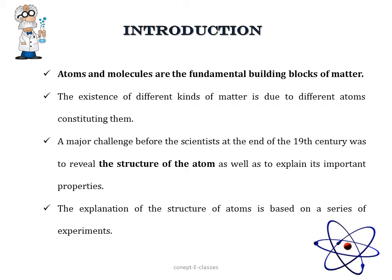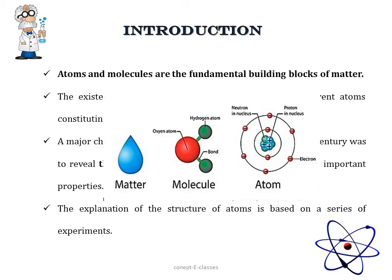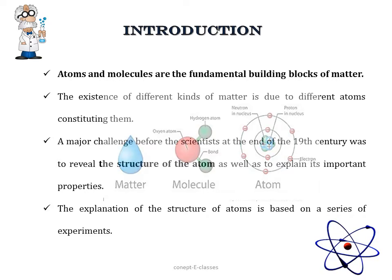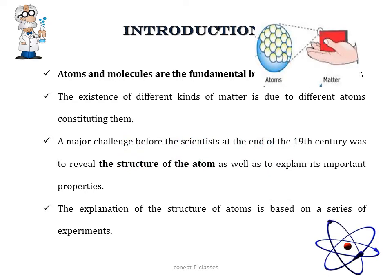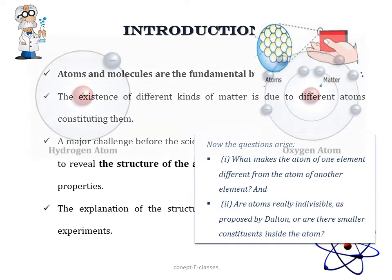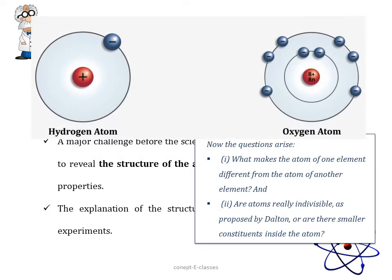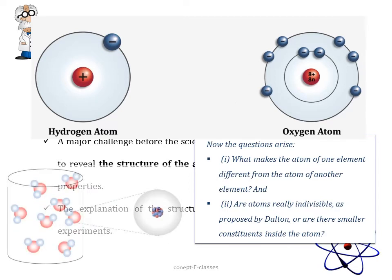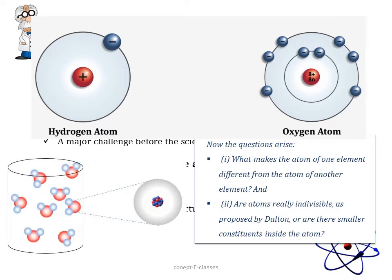In Chapter 3 we learned that atoms and molecules are the fundamental building blocks of matter. The existence of different kinds of matter is due to different atoms constituting them. We saw Dalton's atomic theory postulates that all matter is made up of small, indivisible particles called atoms that cannot be further divided. All atoms of an element are the same whereas atoms of different elements are different. So what makes the atom of one element different from another, and are atoms really indivisible? Are there other smaller constituents inside the atom?